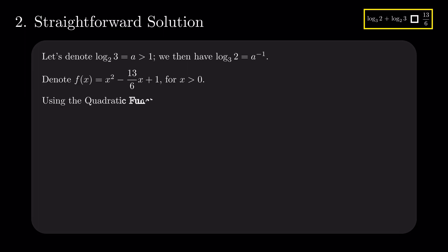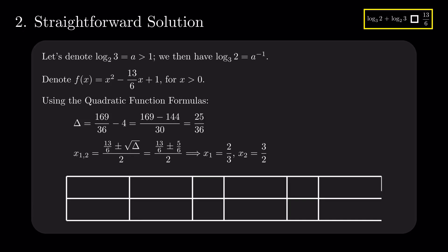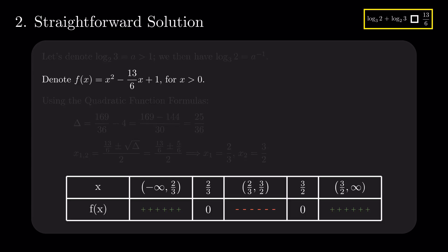Easy enough! Using the properties of the quadratic function, we find the roots of the function to be 2 divided by 3 and 3 divided by 2. We also lay out the intervals bounded by them and the sign that the function f takes on them.